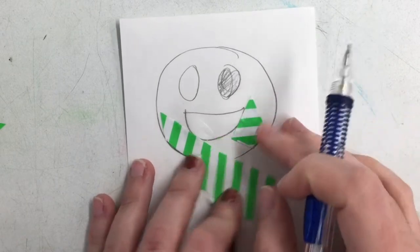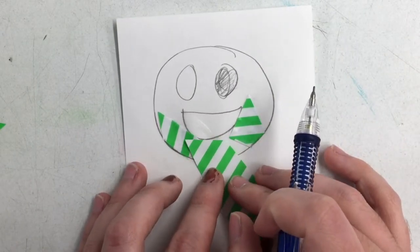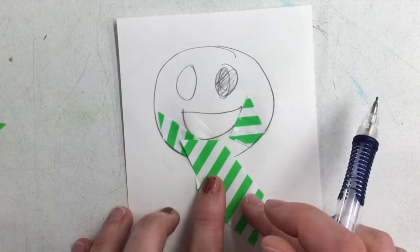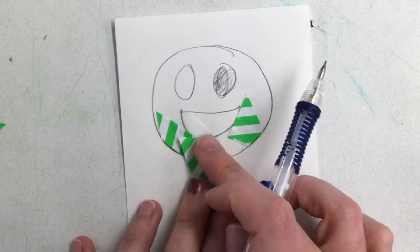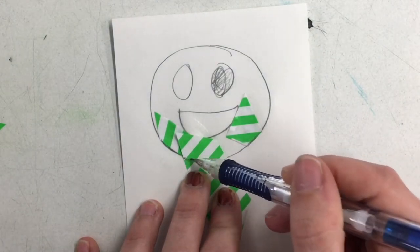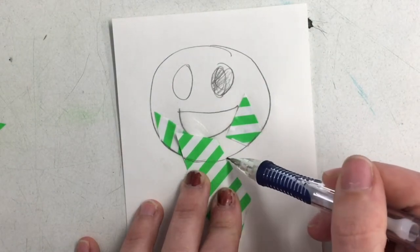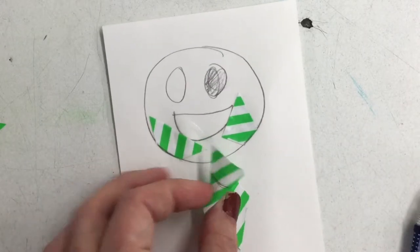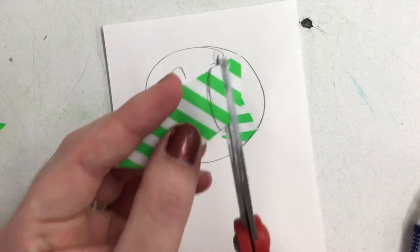Lining it up with the bottom here. And then noticing where my pencil drawing is on the bottom on either side, I can just trace my drawing to match it. Now that I've got that line drawn, I can just simply cut it out with my scissors.